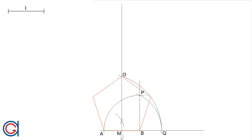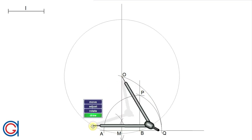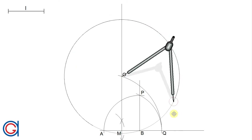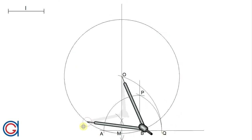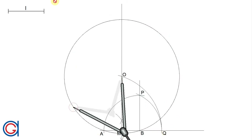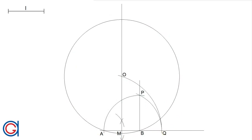This point O is also the top vertex of the pentagon with side AB, which is shown here drawn in red lines. The next step is to draw the circumscribed circle: setting the compass on point O and with radius OA, we draw the circle.